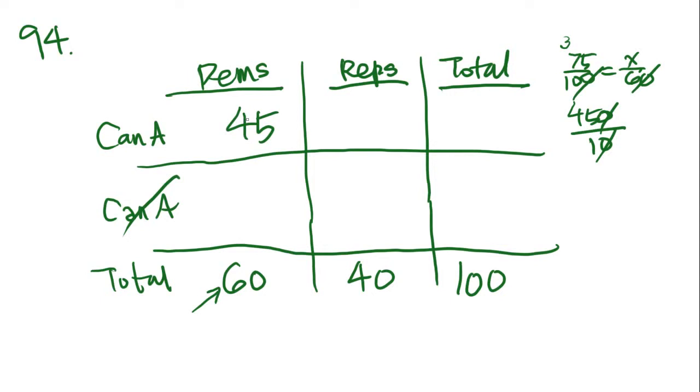The problem also tells us that 20% of the registered voters who are Republican are going to be voting for candidate A. So 20% of 40, that is—let's cancel out the zeros—going to be 8. So 8 Republicans are going to be voting for candidate A. Now we just add these two, and we get 53. So 53% of the people in this town are going to be voting for candidate A. And that is also what we're looking for. It says what percentage of the registered voters are going to be voting for candidate A, and 53% is answer choice B.